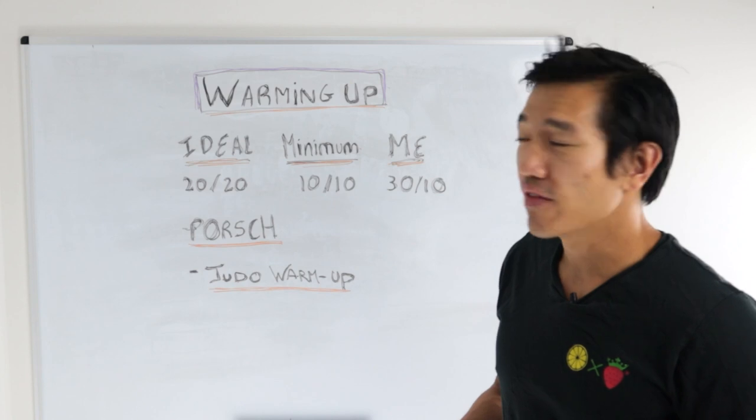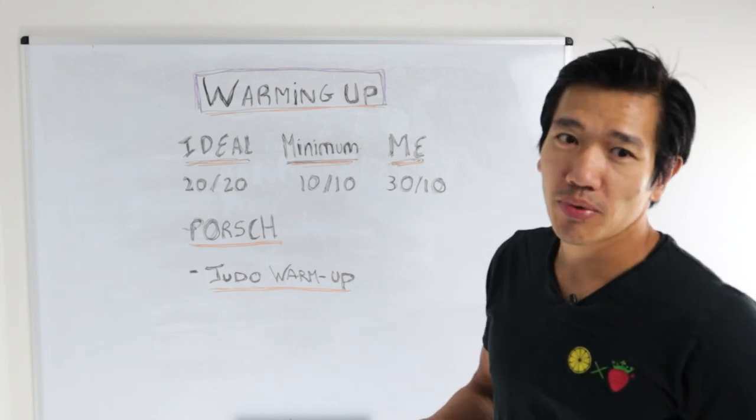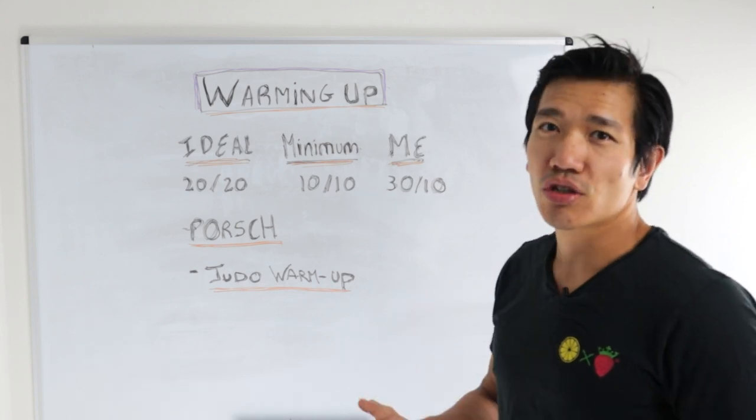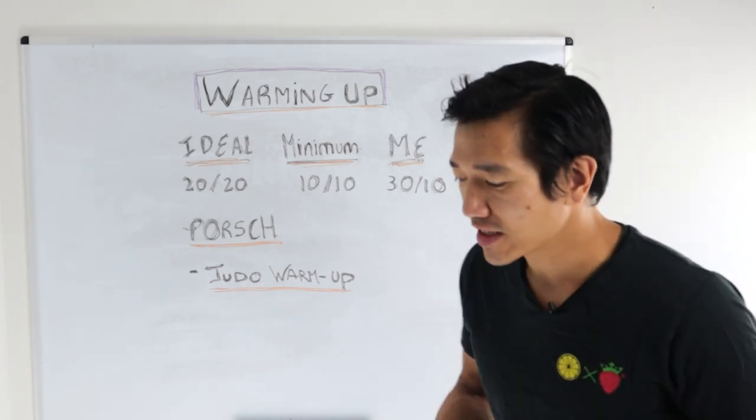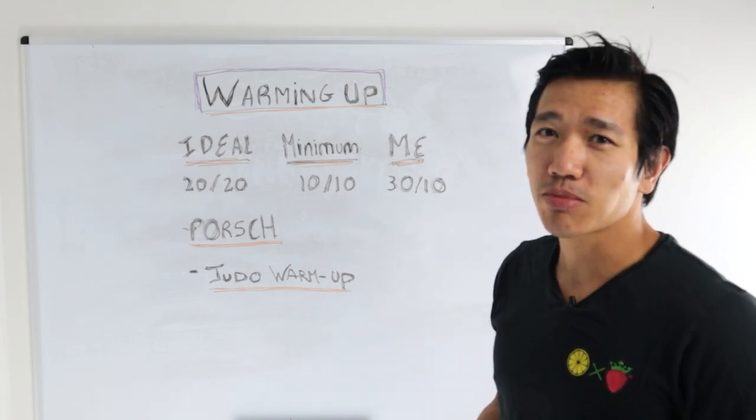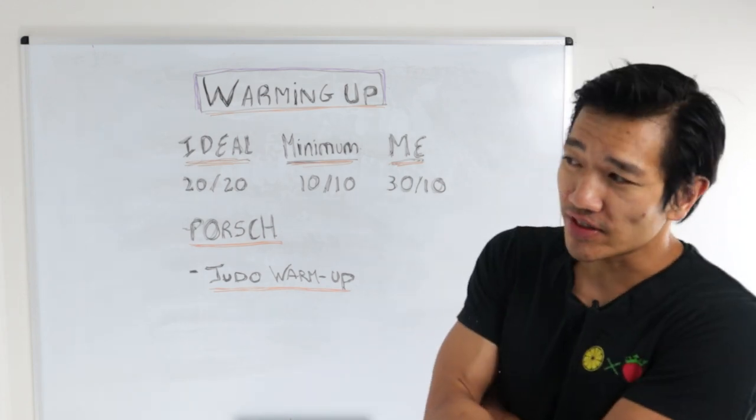One good rule of thumb is that if you're able to get your heart rate up to its maximum at least two times, then you're good, especially if you're older. Because if you're older like me, you've probably accumulated a lot of injuries. It's not something you should play around with.